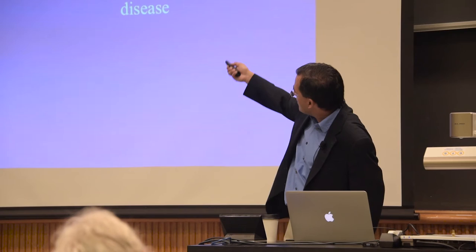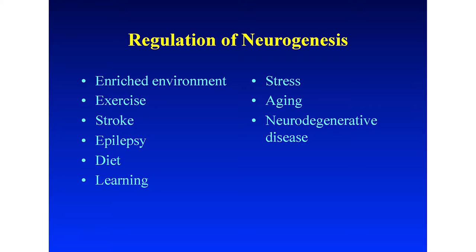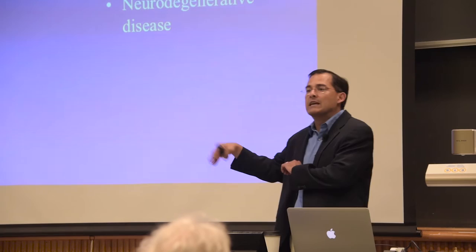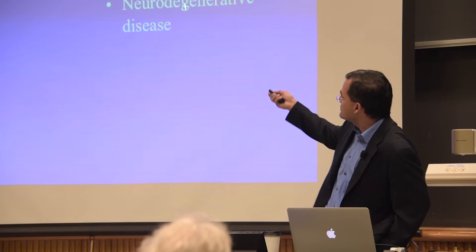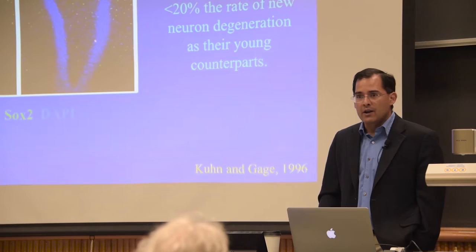That's the good news. The not-so-good news is there are a number of adverse effects that can actually decrease neurogenesis. One of these is stress. Another is lack of sleep — these are the two things undergrads at Berkeley do when cramming for an exam. Another is aging, which I'll talk about in a minute. And furthermore, there is at least some evidence that neurodegenerative disease can actually decrease the function of stem cells within the adult brain.